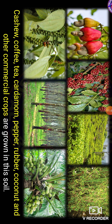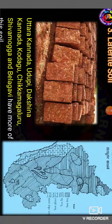Laterite soil is found in the districts of Uttara Kannada, Udupi, Dakshina Kannada, Kodagu, Chikmagaluru, Shivamogga, and Belagavi. Most of the soil in these areas is laterite soil.